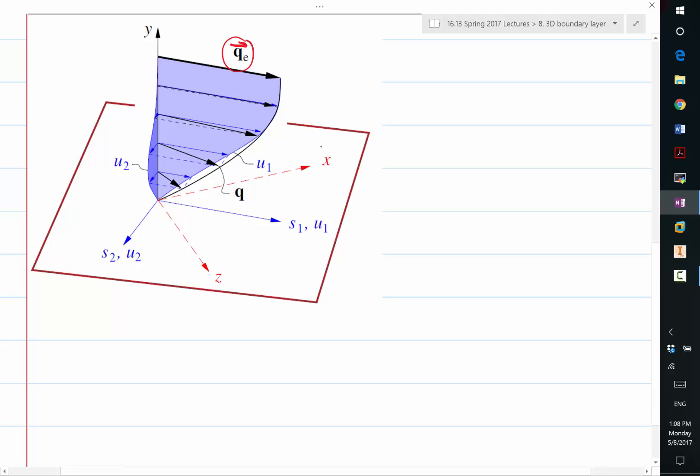So we assume there is an X and Z coordinate living on the surface that are orthogonal. And this QE is basically a vector that contains the UEX and UEZ.